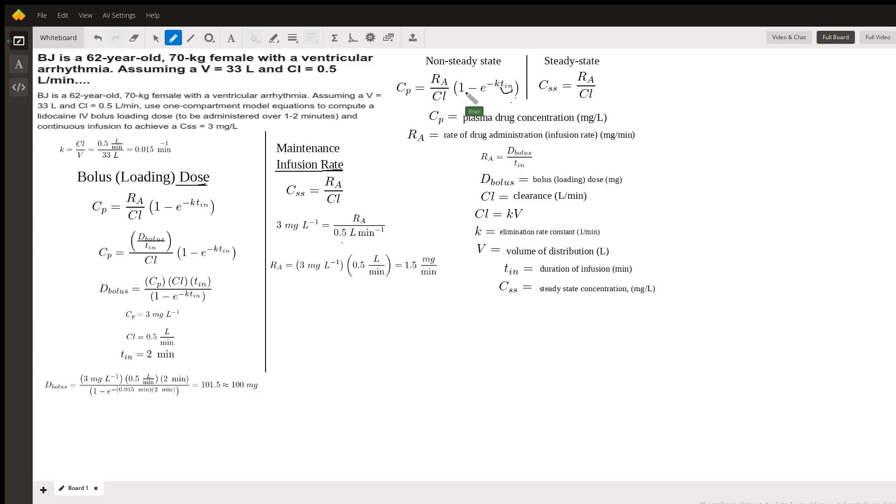And when that happens, one minus zero is simply one, and we're left with rate of administration over clearance, which is the same thing. So again, we use the non-steady-state equation to solve for a steady-state concentration because they asked for it in a specific period of time.